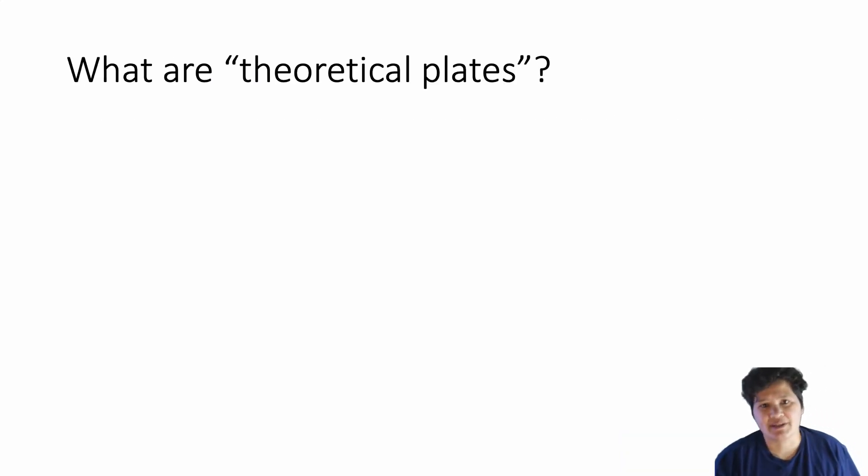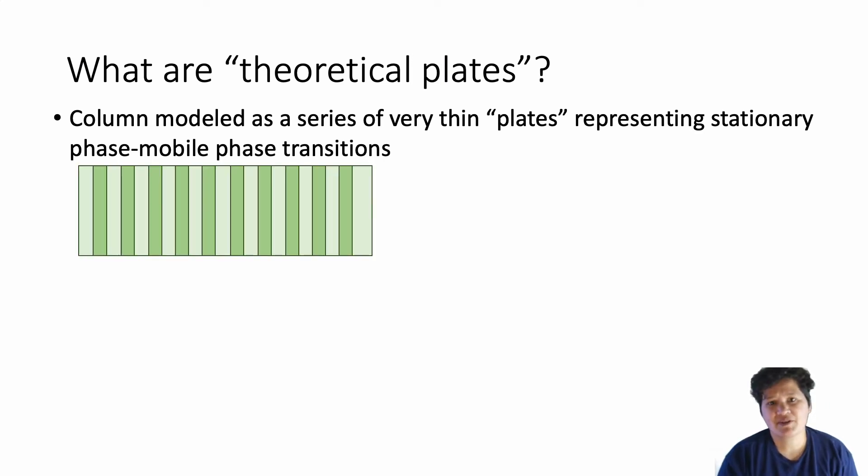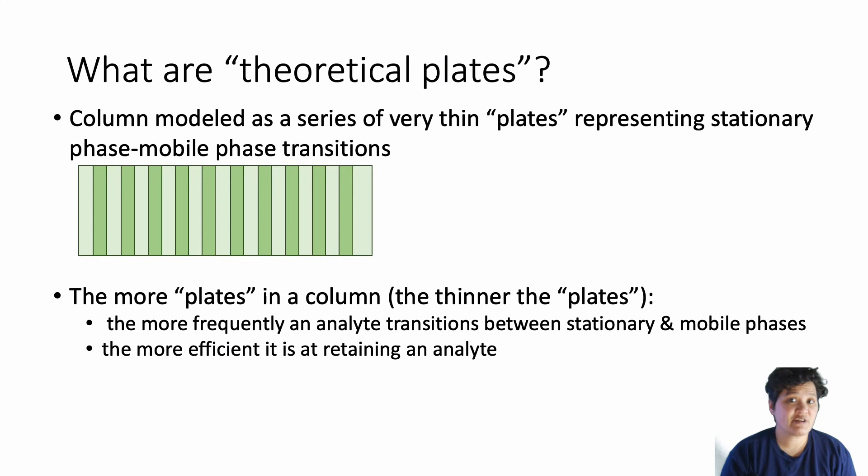So now we get to talk about theoretical plates. Try not to think of dinner plates, but rather as flat plates of metal stacked on top of each other. And each of those plates represents a phase transition. Now I know that most of the time when you hear the term phase transition, you think of going from liquid to gas or something like that. But in chromatography, this means partitioning from stationary phase to mobile phase and vice versa. If you have very thin plates, that means there's a very short distance between where an analyte goes from stationary phase into mobile phase.